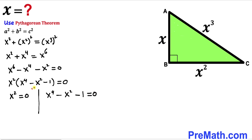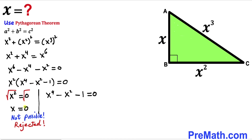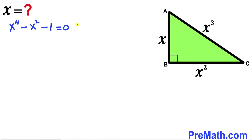Taking the square root of x squared equals zero, our x value turns out to be zero. However, x equals zero is not possible for a triangle, so we reject that value. We now focus on the polynomial factor, giving us the equation x to the fourth minus x squared minus 1 equals zero.